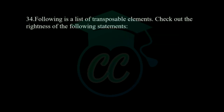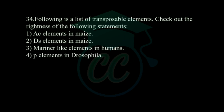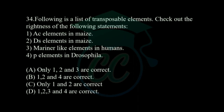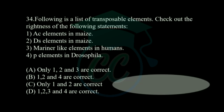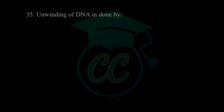Next question: following is a list of transposable elements — check the correctness of these statements. Statement 1: Ac element in maize; statement 2: Ds element in maize; statement 3: mariner elements in humans; statement 4: P elements in Drosophila. Options: only 1, 2, and 3 correct; 1, 2, and 4 correct; only 1 and 2 correct; all four correct. The correct answer is option D — all statements are correct.